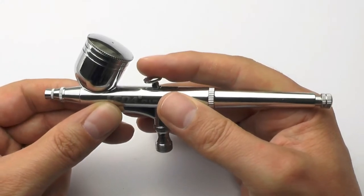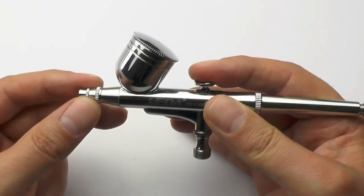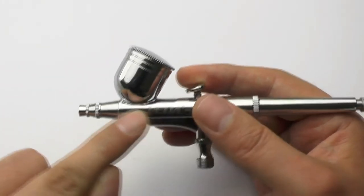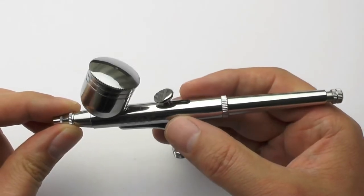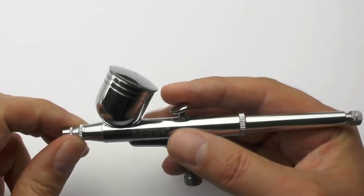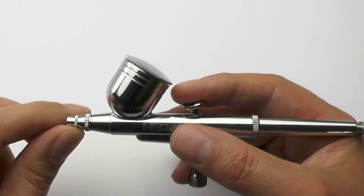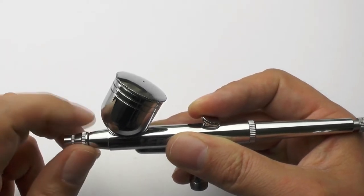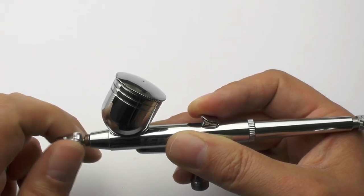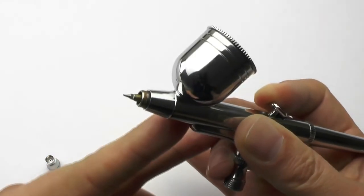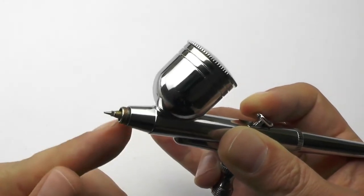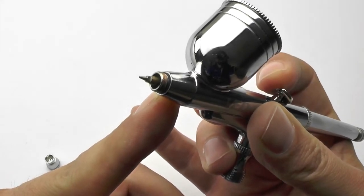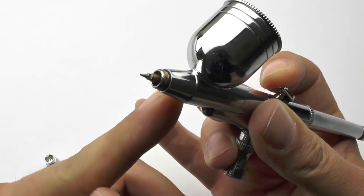It's only when you start to pull back on the trigger that you'll get the release of the paint. The paint is held in this section and then the needle which travels the length of the airbrush is pulled back from the nozzle. I'm just going to show you that. I'm going to press down and pull that back, then we'll undo this very end section here. Basically what we've got there is the nozzle. That nozzle has a very fine hole in it and you can see the needle coming back through again.